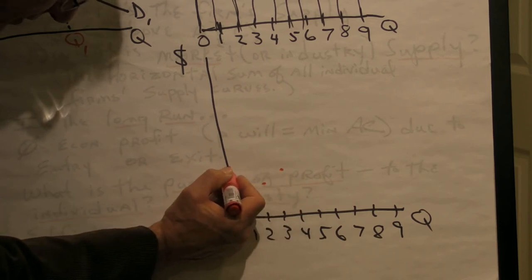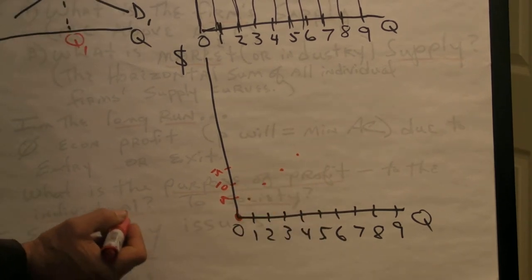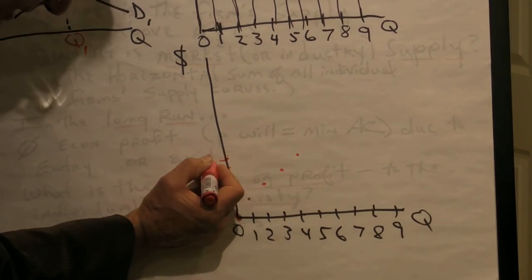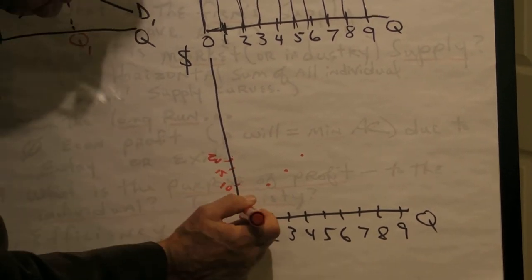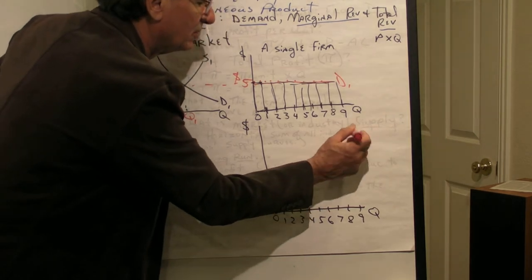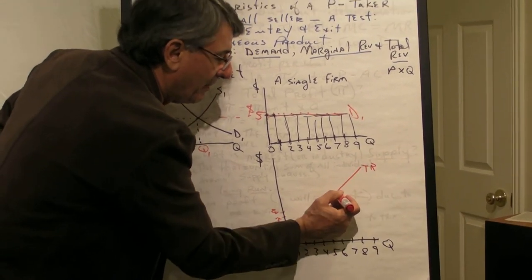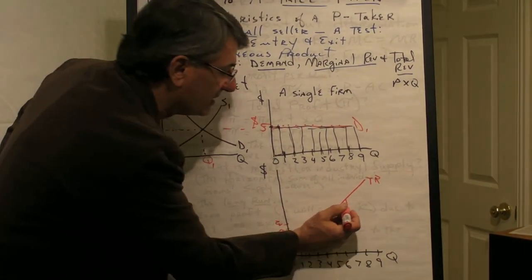When it sells three, total revenue is 15. When it sells four, total revenue is 20. Now, I would guess that at this point you can see the pattern emerging. The pattern is that every time they sell one additional unit, their total revenue goes up by $5.00.